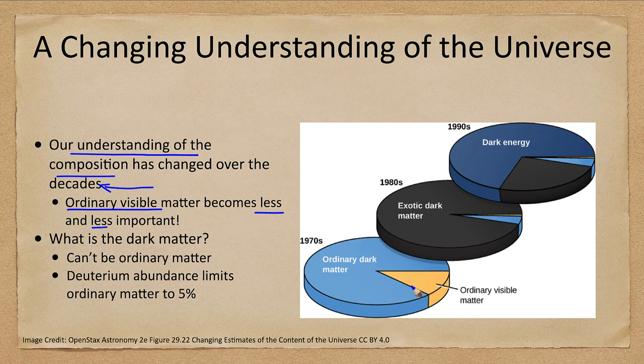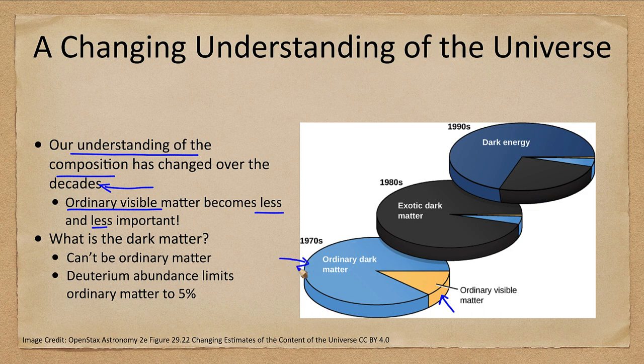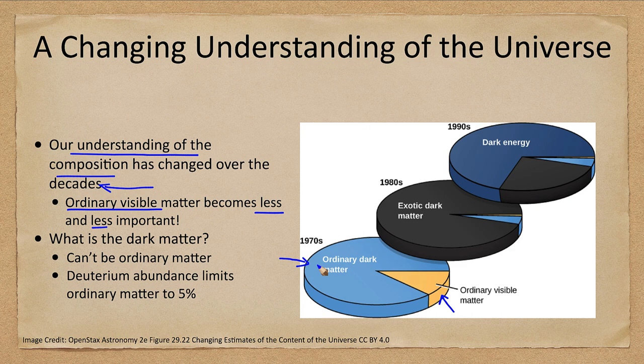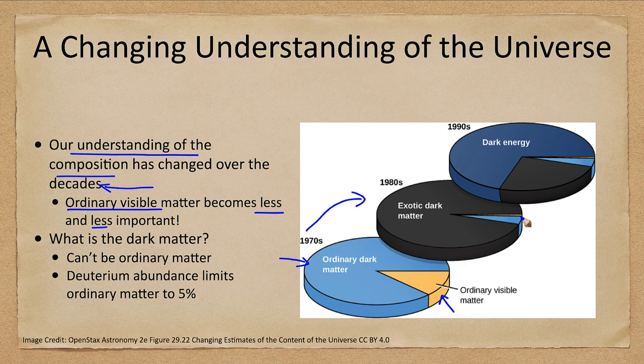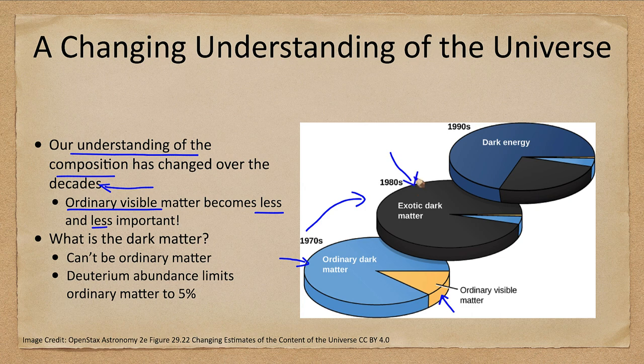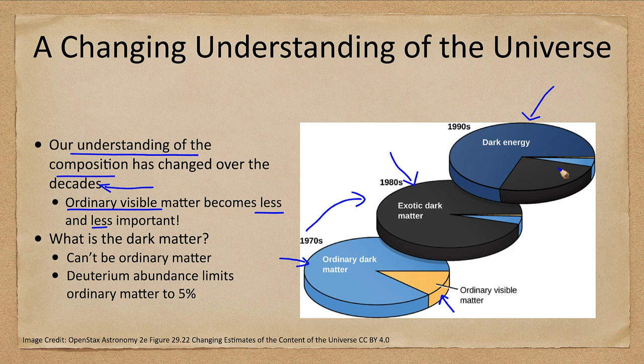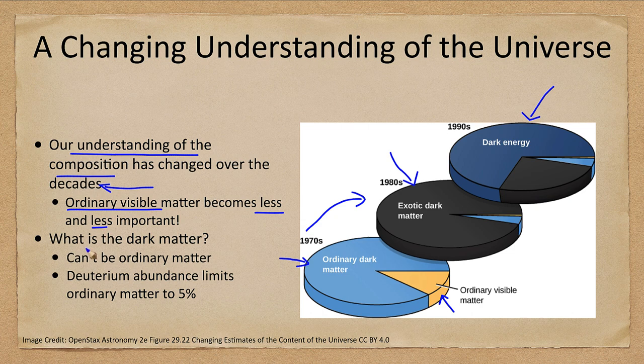In the 1970s, we had ordinary visible matter and some kind of dark or missing matter that was ordinary material. By the 1980s, we had that ordinary dark matter, ordinary visible matter is now a much smaller portion, and exotic dark matter - some kind of unusual particle - made up a large portion of the universe. By the 1990s, we learned about dark energy, which now consumes most of this chart, and we see only a tiny bit left for ordinary visible matter.